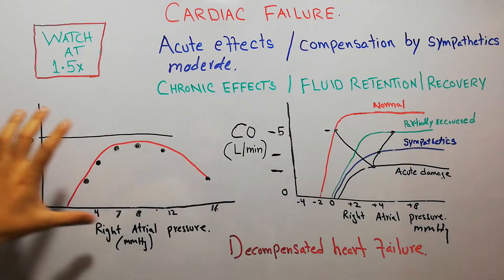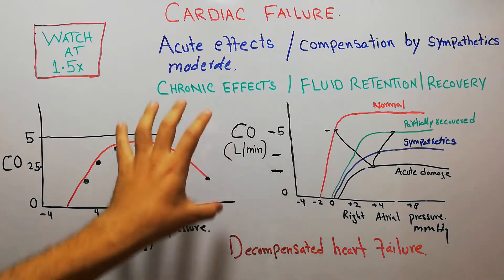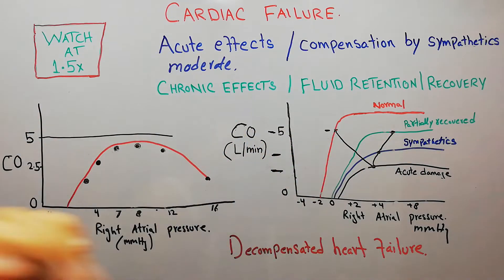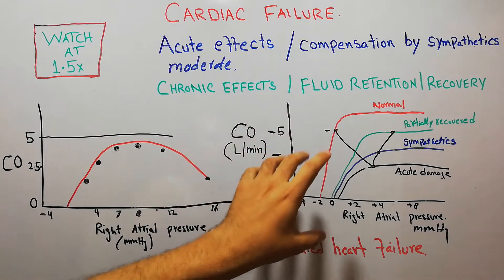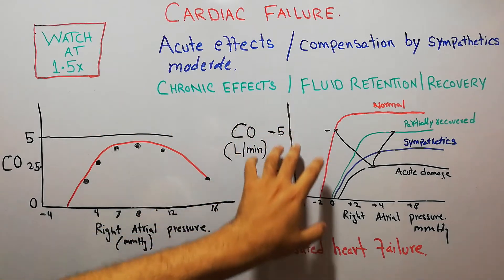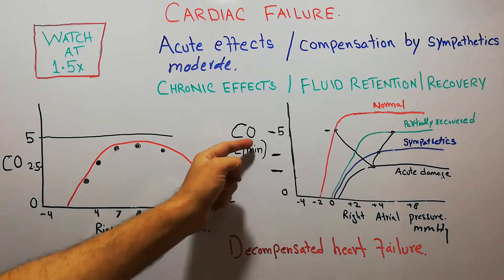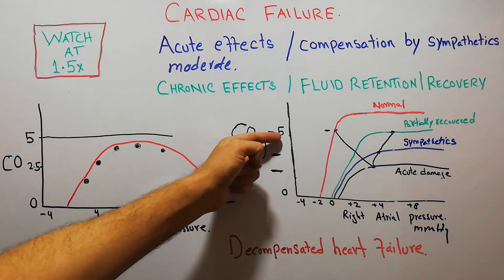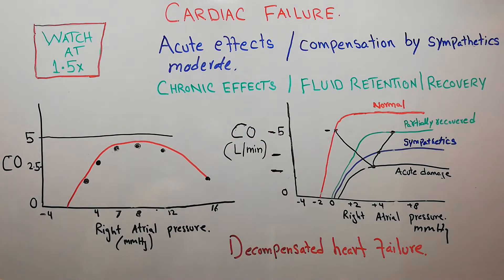With two graphs we are going to discuss compensated and decompensated heart failure, as we have discussed in previous lectures. On the y-axis of these graphs we have the cardiac output, and the cardiac output of the normal heart is 5 liters per minute.